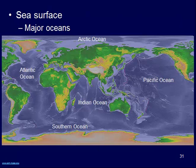So, sea surface. If you look in your textbook, there are some great maps that show you some of the major oceans, such as the Atlantic Ocean on the east coast of the United States, the Pacific Ocean, which is what Oregon and Washington bump up to — also the largest and deepest ocean on the planet. Then we have the Indian Ocean, the Arctic Ocean, and the Southern Ocean. These are all the major large bodies of water that exist on the planet, and in each of these different oceans we have some varying circulation patterns.